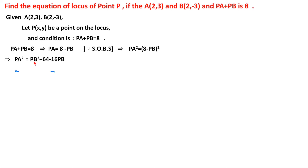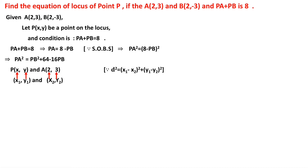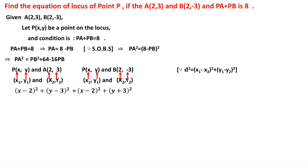The distance formula gives d² = (x1 - x2)² + (y1 - y2)². So PA² = (x - 2)² + (y - 3)² and PB² = (x - 2)² + (y + 3)². Substituting into the equation: (x-2)² + (y-3)² = 64 + (x-2)² + (y+3)² - 16·PB.